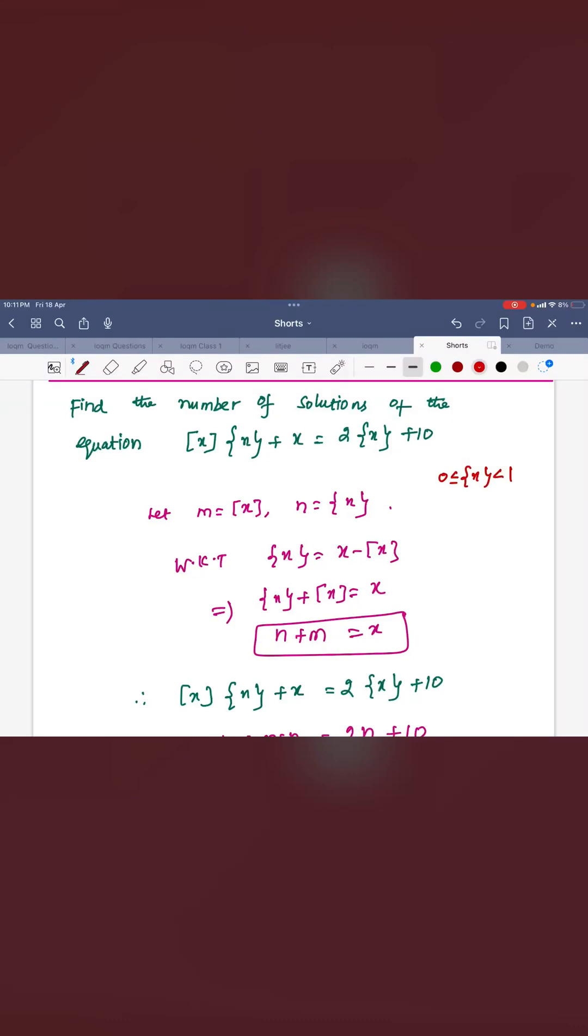Hello everyone, I am Prem Kumar. Welcome to Math G Academy. Today I am going to discuss with you a very interesting question, the number of solutions of the equation. Greatest integer function into the fractional part function plus x is equal to 2 times fractional part function plus 10.